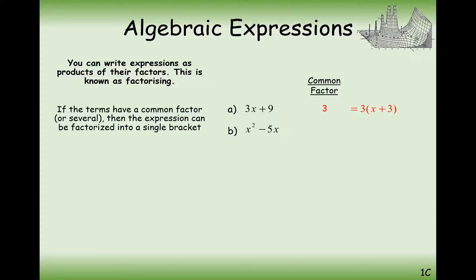We could also have a letter that's a common factor between both terms. In this case it's the letter x that's in common between both terms, so the x needs to go at the front. What do I need to times x by to make x squared? Well, that's an x. And what do I need to times x by to make minus 5x? That's minus 5.